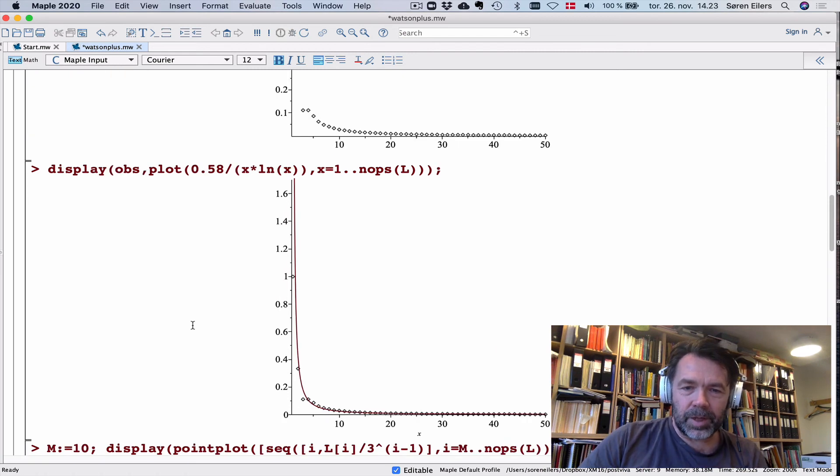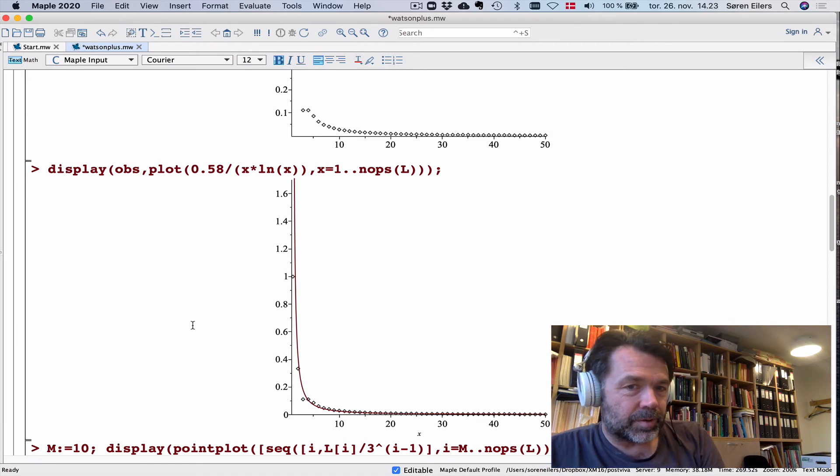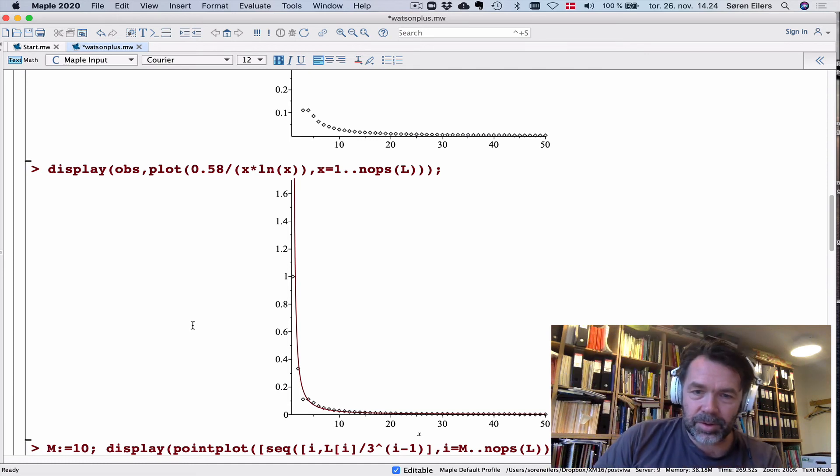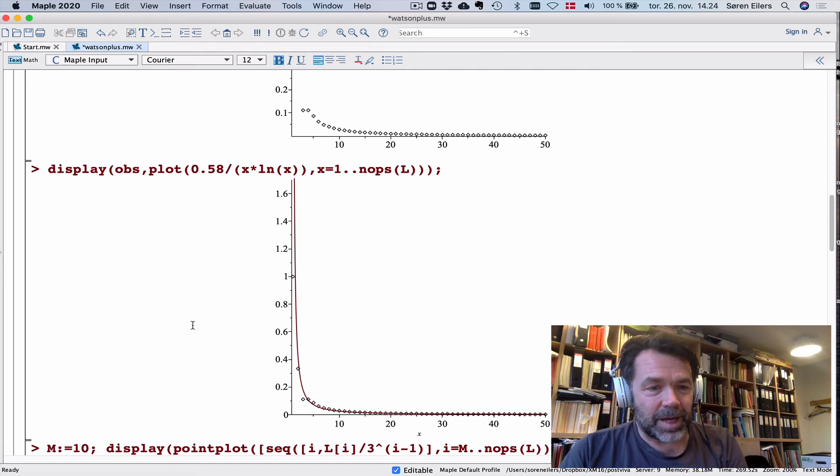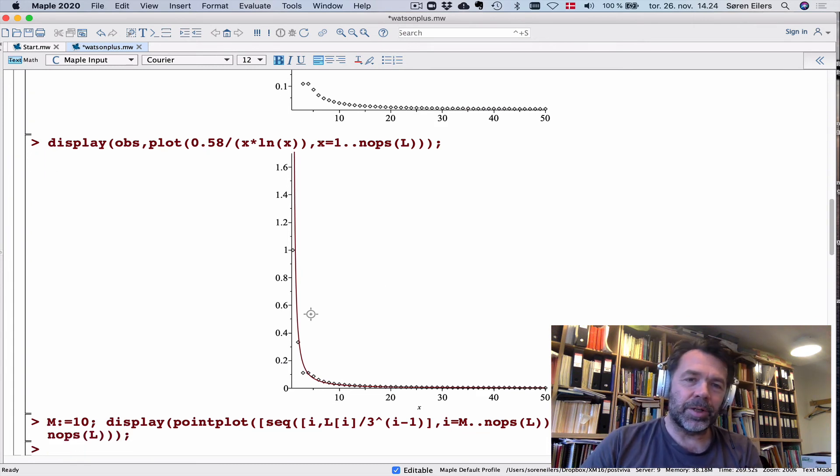Even now, if I plot this together with 0.58/(x log x), this looks as though it's a fairly decent match. But already here, we're encountering one of the dangers of doing visualization with experimental mathematics. The human eye really wants to be deceived. You see something like this, and it looks like they fit together. This looks promising.